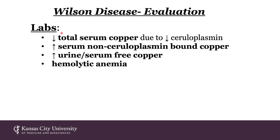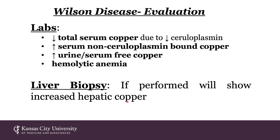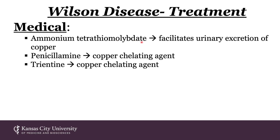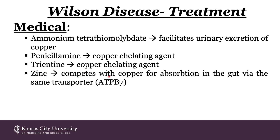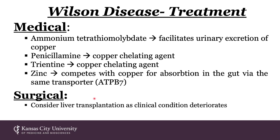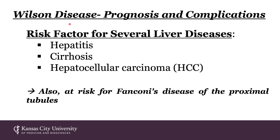Labs associated with Wilson disease include decreased total serum copper, increased serum non-ceruloplasmin-bound copper, increased urine and serum free copper, and hemolytic anemia. Liver biopsy would show increased hepatic copper. Treatment is with chelation: ammonium tetrathiomolybdate facilitates urinary excretion of copper; penicillamine and trientine are other copper chelating agents. Zinc can also be a treatment — it competes with copper for absorption in the gut via ATP7B. Clinicians might also consider liver transplantation. Risk factors for associated diseases include hepatitis, cirrhosis, hepatocellular carcinoma, and Fanconi's disease of the proximal tubules. Please note the board-style practice questions appended at the end of the PowerPoint.